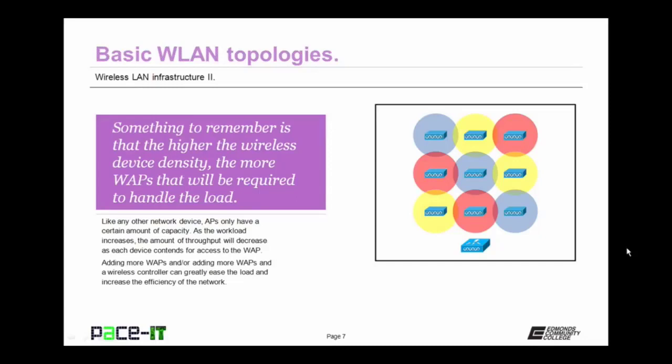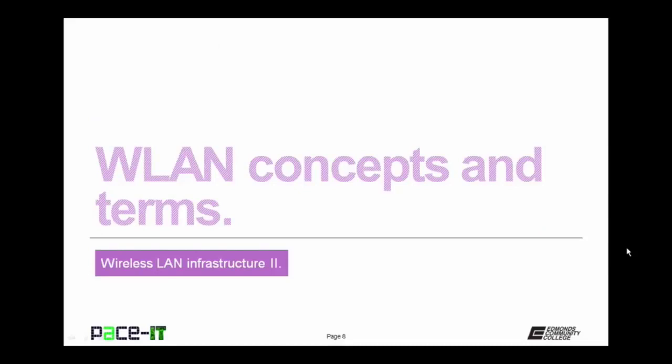Like any other network device, access points only have a certain amount of capacity. As the workload increases, the amount of throughput will decrease as each device contends for access to that wireless access point. Adding more WAPs and wireless controllers can greatly ease the load and increase the efficiency of the network.